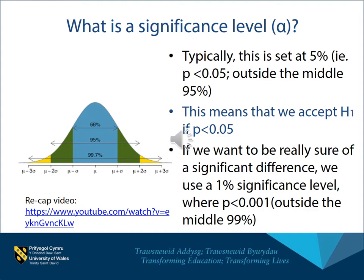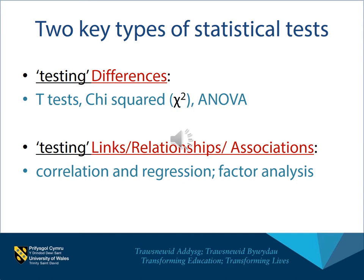There are many different types of statistical tests, and certainly with a package such as SPSS the options are quite mind-blowing. However, we can very simply divide them into two main categories. Many statistical tests look for differences — things like T-tests and ANOVA, analysis of variance, typically look for differences. Very often it's links we're interested in, and things like correlation and regression will help us look for links.